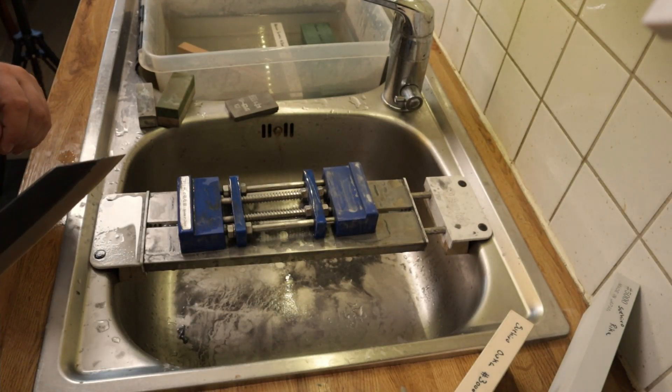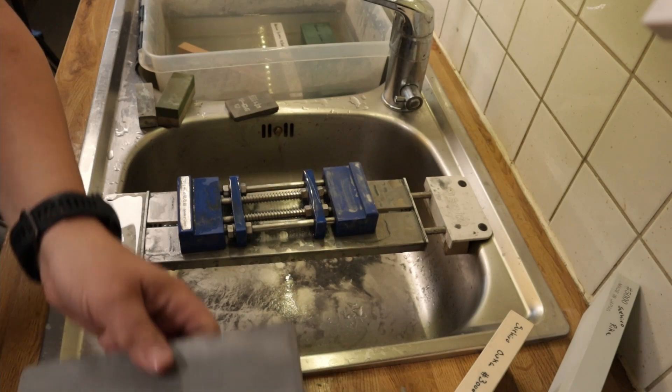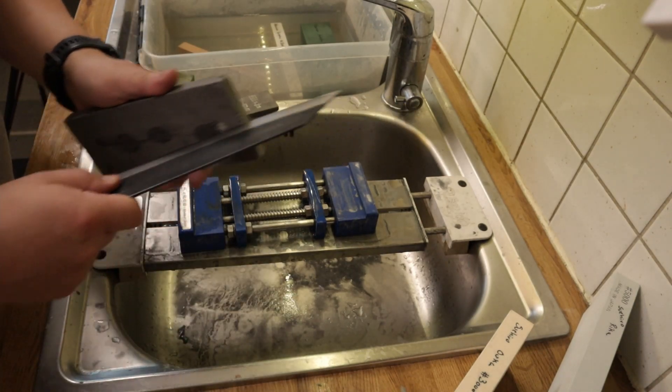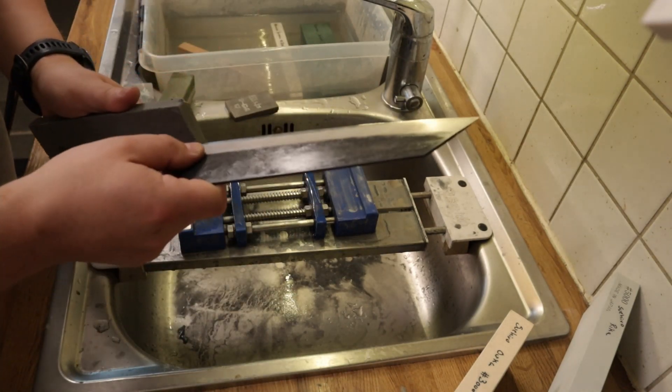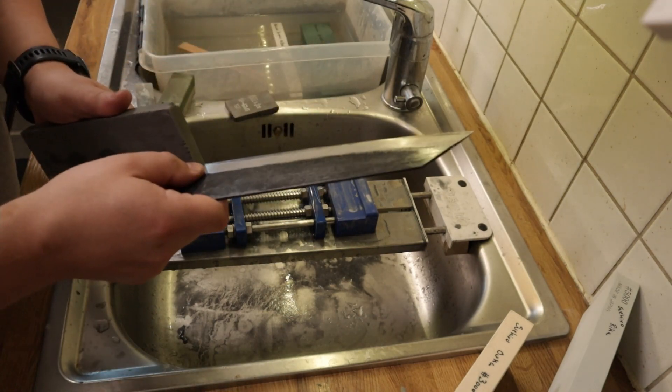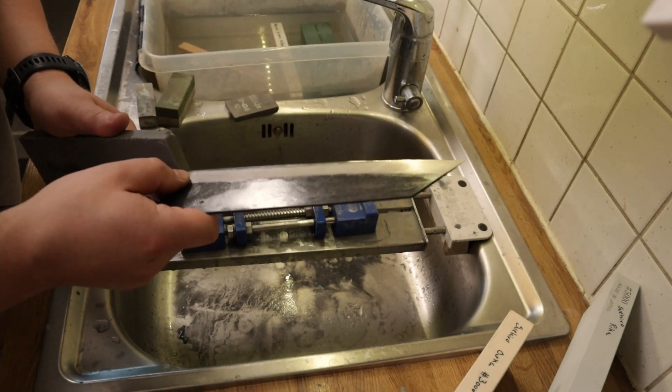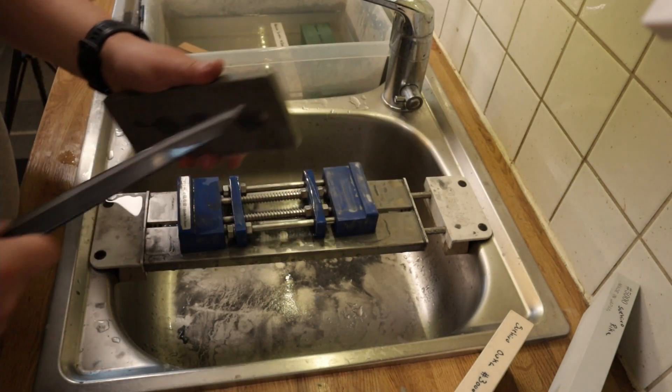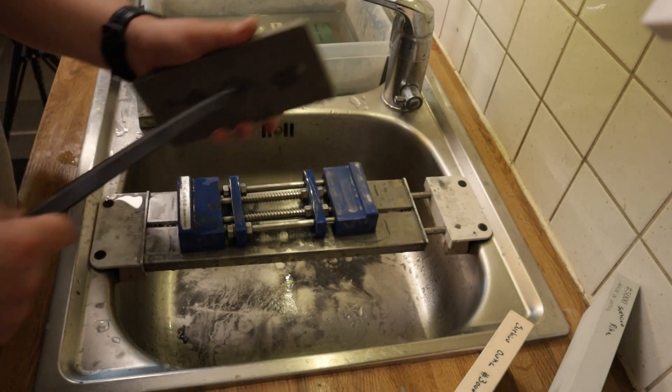Yes, so it's about time for another video. Today we are going to sharpen the good old Kiritsuki Bunka from Masashi. It's a carbon steel, blue number two.